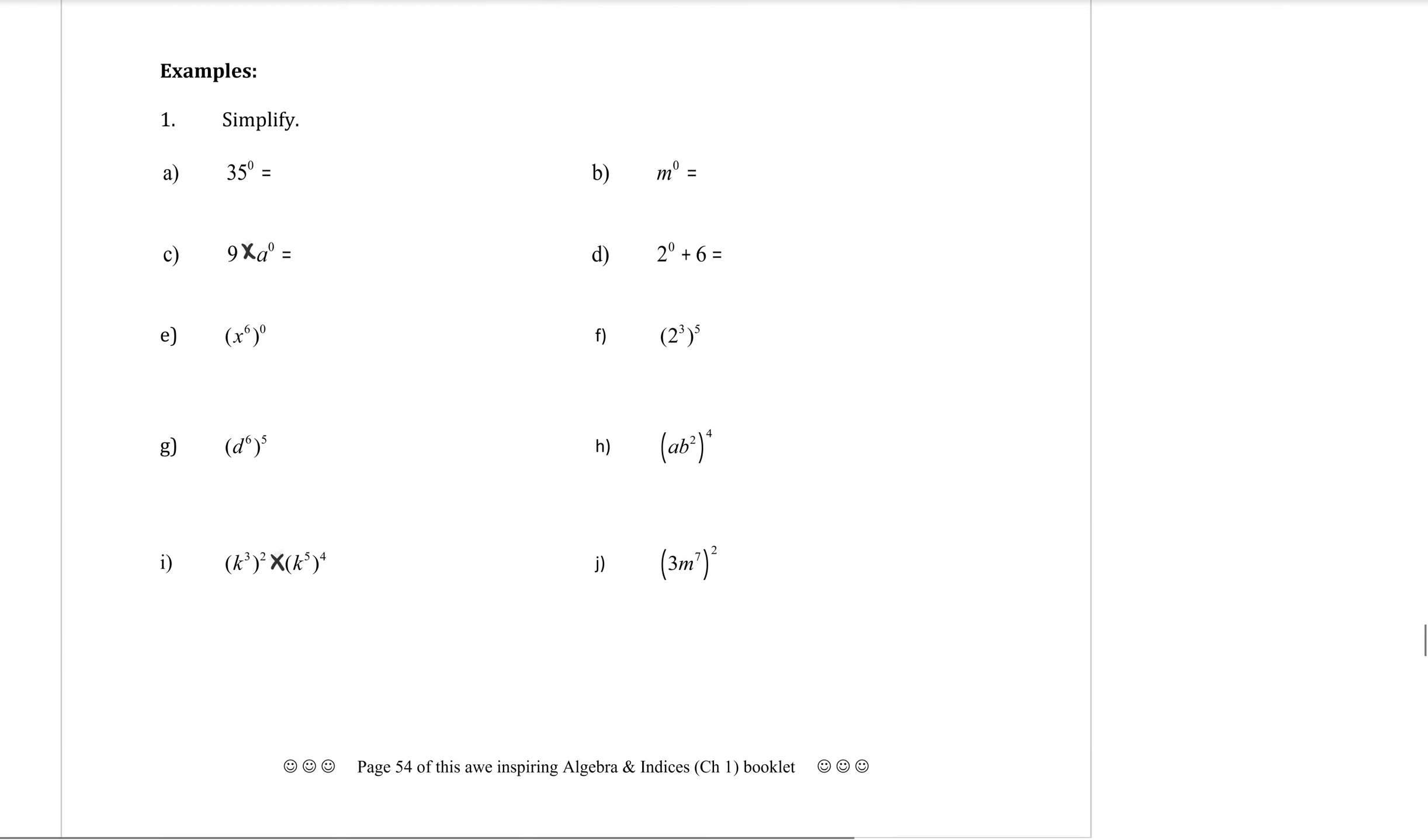In the examples, number one A. Simplify. We have 35 to the power of zero. As soon as you see a power of zero, circle the thing that is to the power of zero and write a little one above it because you know that that's going to equal one. Sometimes it's not the whole thing.